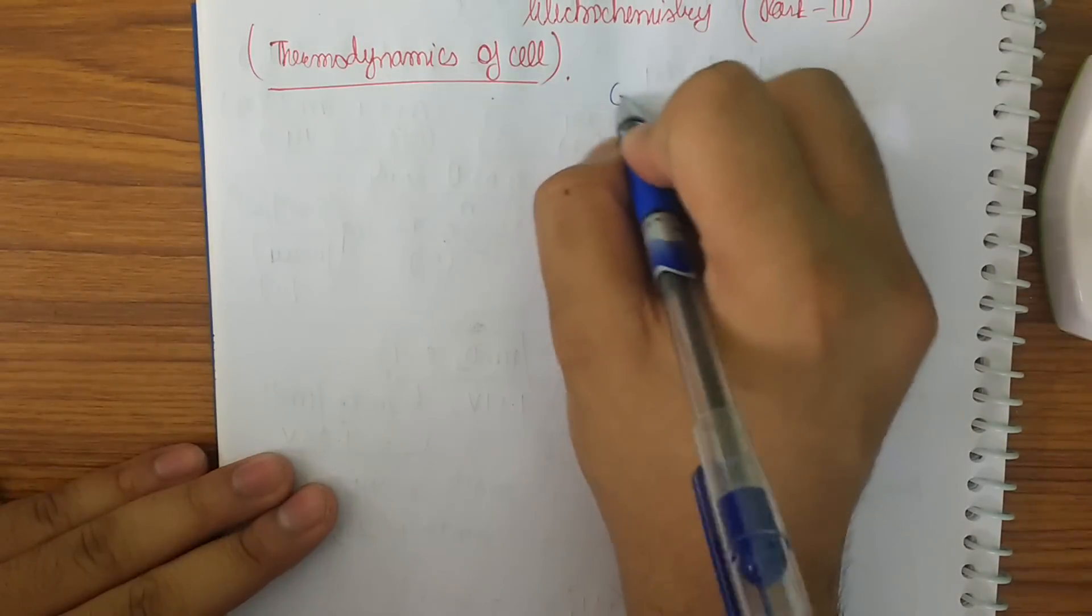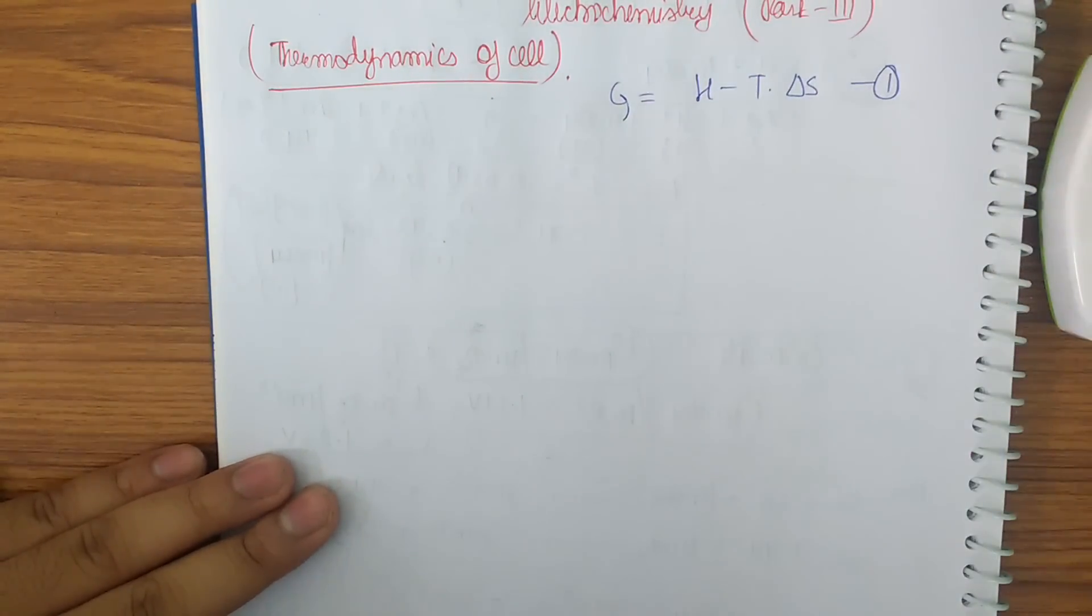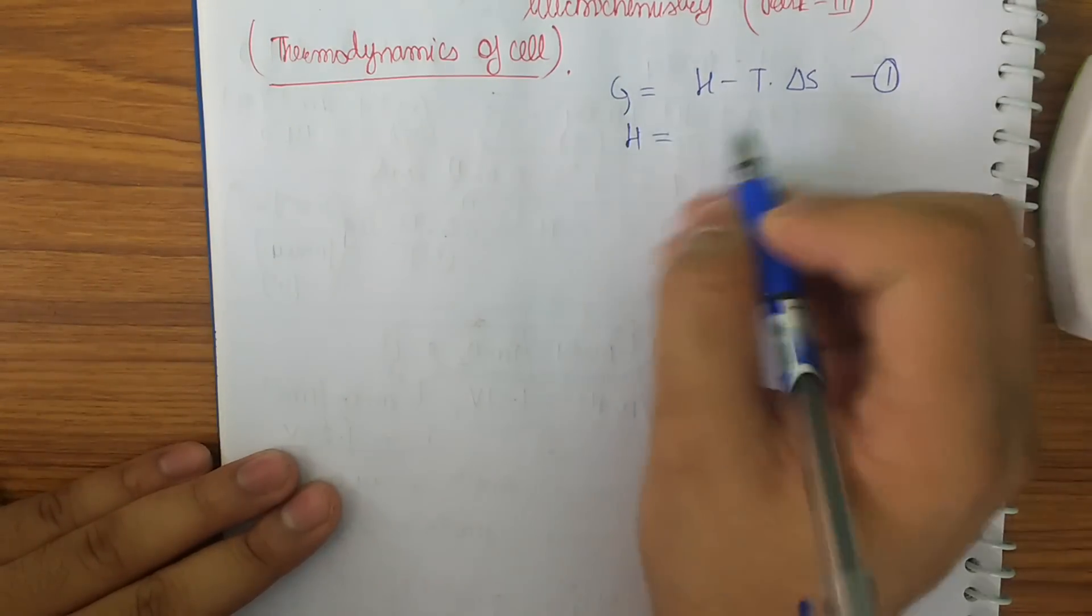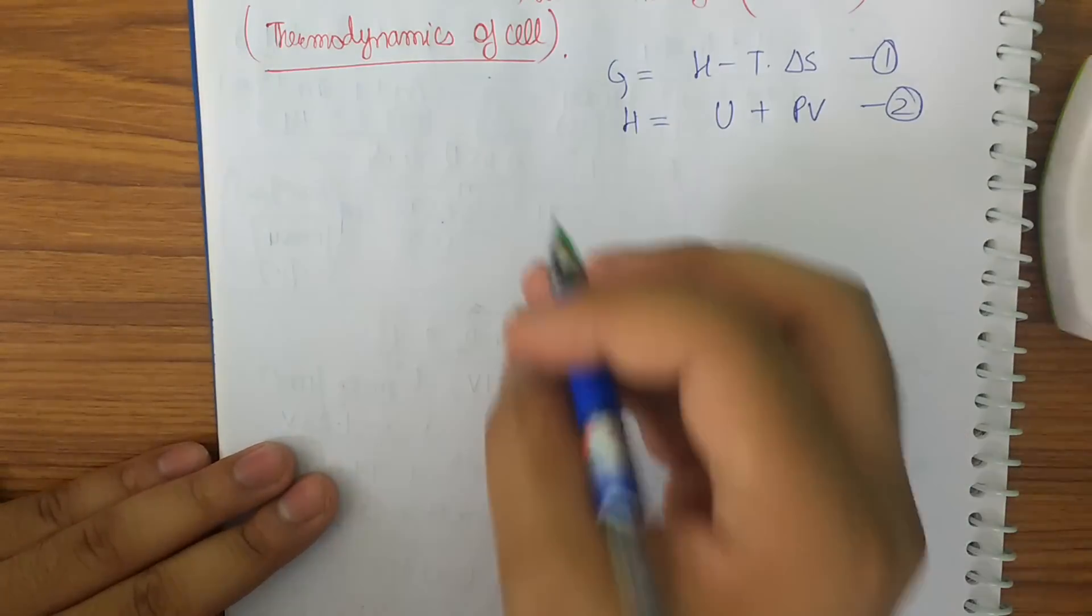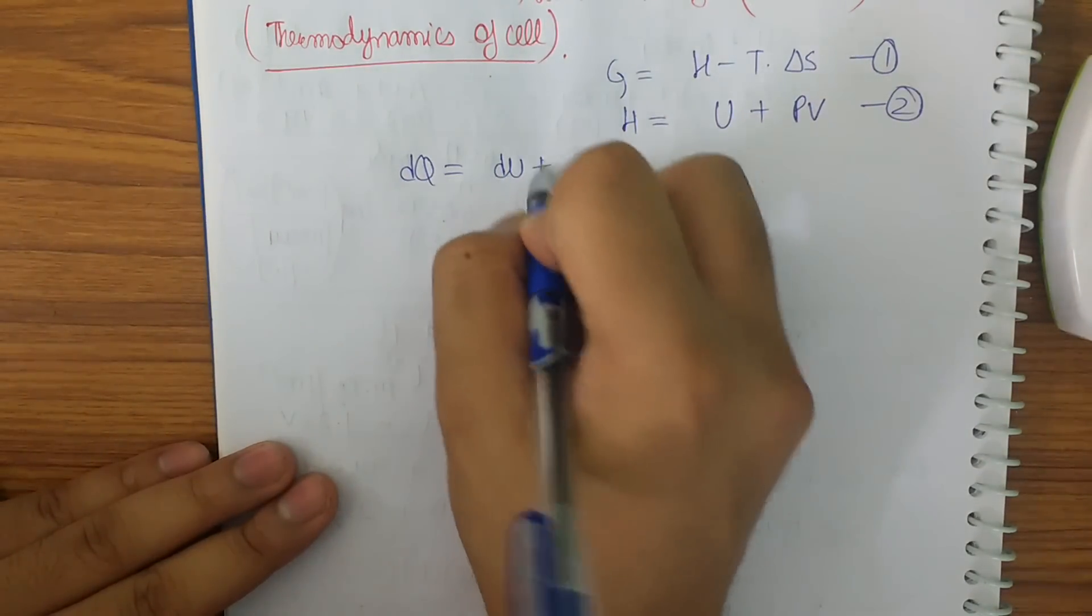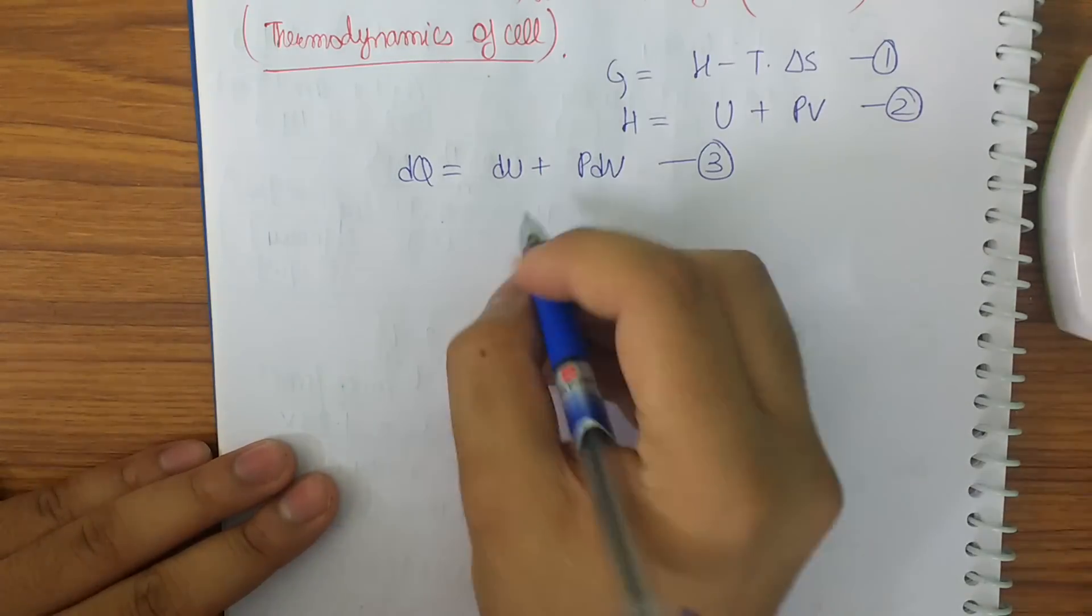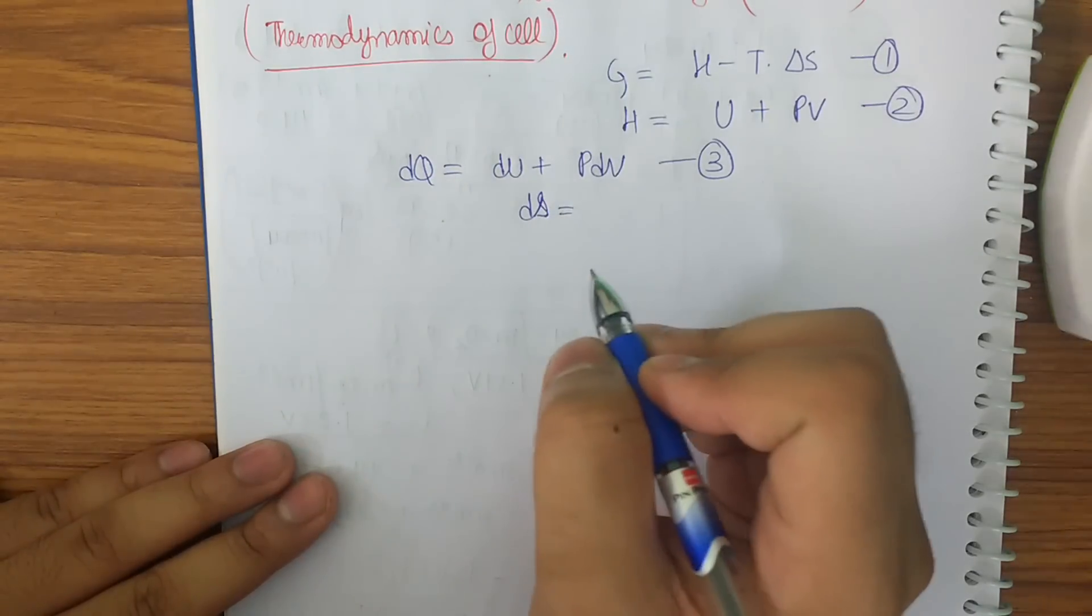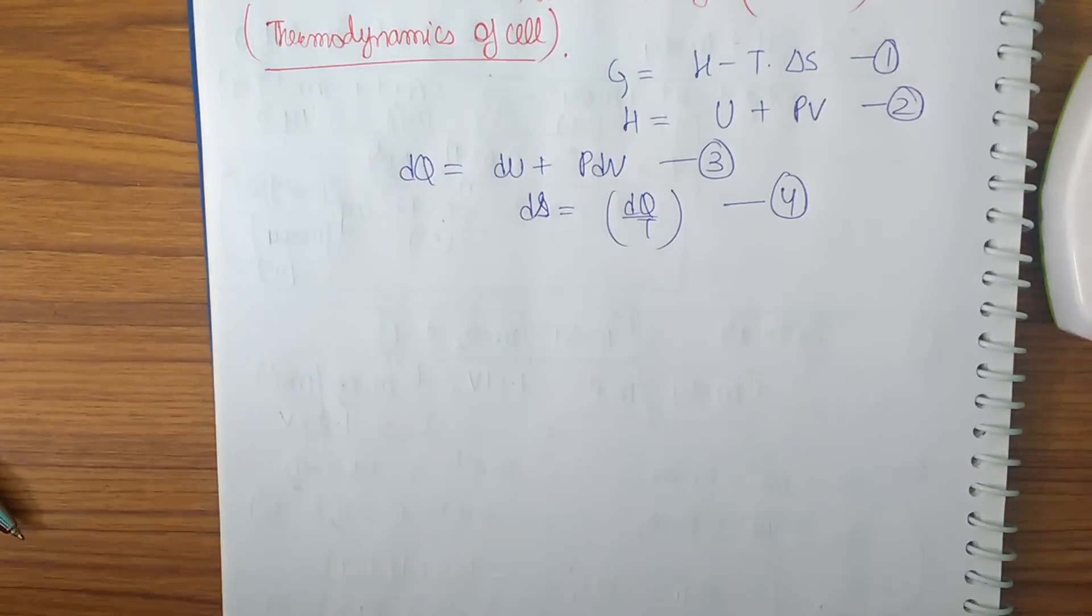We all know that G is equal to H minus T into delta S. This is one of the basic equations in thermodynamics. So let me take it to be equation one. Now for the second equation we know that H is equal to U plus PV. Now let's go further. We also know that DQ is equal to Du plus PV. Let me take it to be equation number three. Now Ds, that is entropy, is equal to DQ by T. Let me take it to be equation number four.